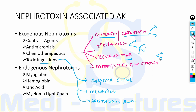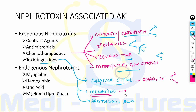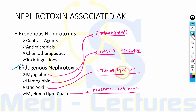Toxic ingestion of ethylene glycol used as antifreeze in industries leads to formation of oxalic acid, which causes direct tubular injury and tubular obstruction. Melamine contamination is associated with nephrolithiasis and AKI. Aristolochic acid leads to Chinese herb nephropathy and Balkan nephropathy.